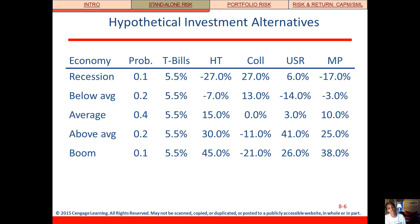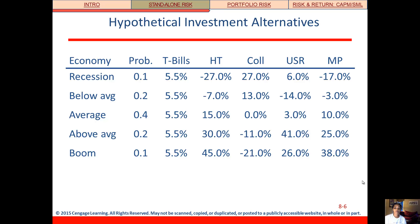What I want you to pay attention to is that high-tech kind of performs as we would expect — it does poorly in a recession and then does increasingly better as the market improves. Collections, though, is the opposite, and US rubber is kind of in the middle. So that's our starting point; that's the information that's given to us.